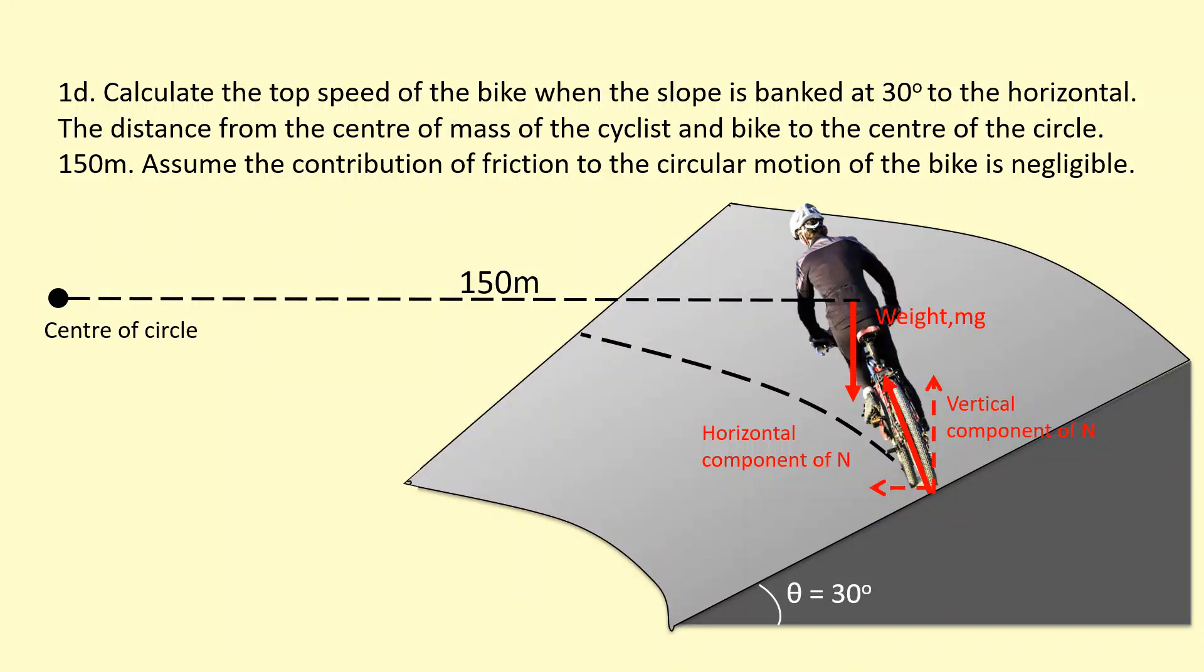We've got 30 degrees to horizontal here. We can show that the normal reaction force here is 30 degrees to the vertical. Let's figure out the centripetal force. So mv squared over r, that's being provided by the horizontal component of the normal reaction force. So N sine 30 is equal to mv squared over r.